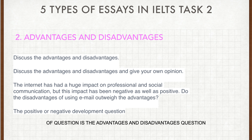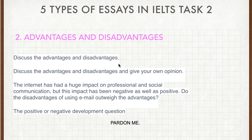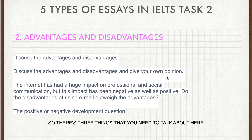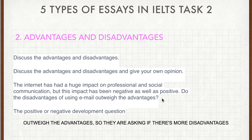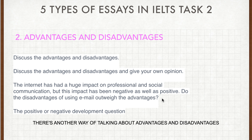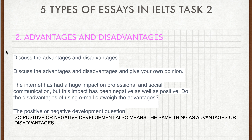The next type of question is the advantages and disadvantages question. They might ask you to discuss the advantages and disadvantages, or they might say discuss the advantages and disadvantages and give your own opinion — so there are three things to talk about. For example: 'The internet has had a huge impact on professional and social communication, but this impact has been negative as well as positive. Do the advantages of using email outweigh the disadvantages?' You also need to know that 'positive or negative development' means the same thing as an advantages or disadvantages question.